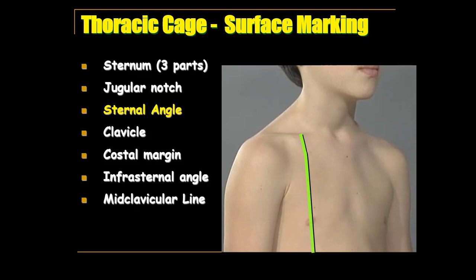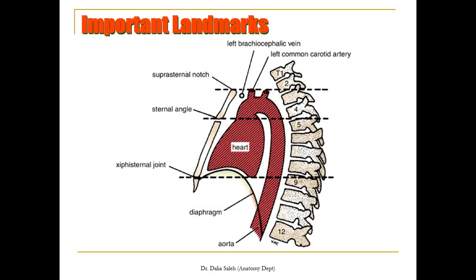Two important lines: the midclavicular line which bisects the clavicle, and the mid-axillary line which lies at the middle of the axilla. In the side view of the chest, important landmarks include: the jugular notch lies at the disc between the 2nd and 3rd thoracic vertebrae; the sternal angle lies at the disc between the 4th and 5th thoracic vertebrae; and the xiphisternal joint lies at the 9th thoracic vertebra. Thus, the body of the sternum lies opposite thoracic vertebrae from number 5 to number 9.